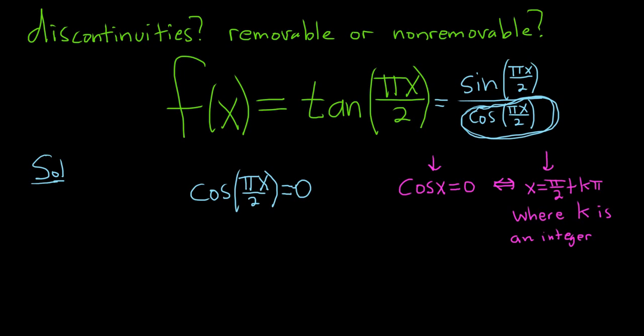In this problem, we don't have cosine of x, we have cosine of this. So you take this—this is your x, you see?—and you set it equal to pi over 2 plus k pi. So you have pi x over 2 equals pi over 2 plus k pi.